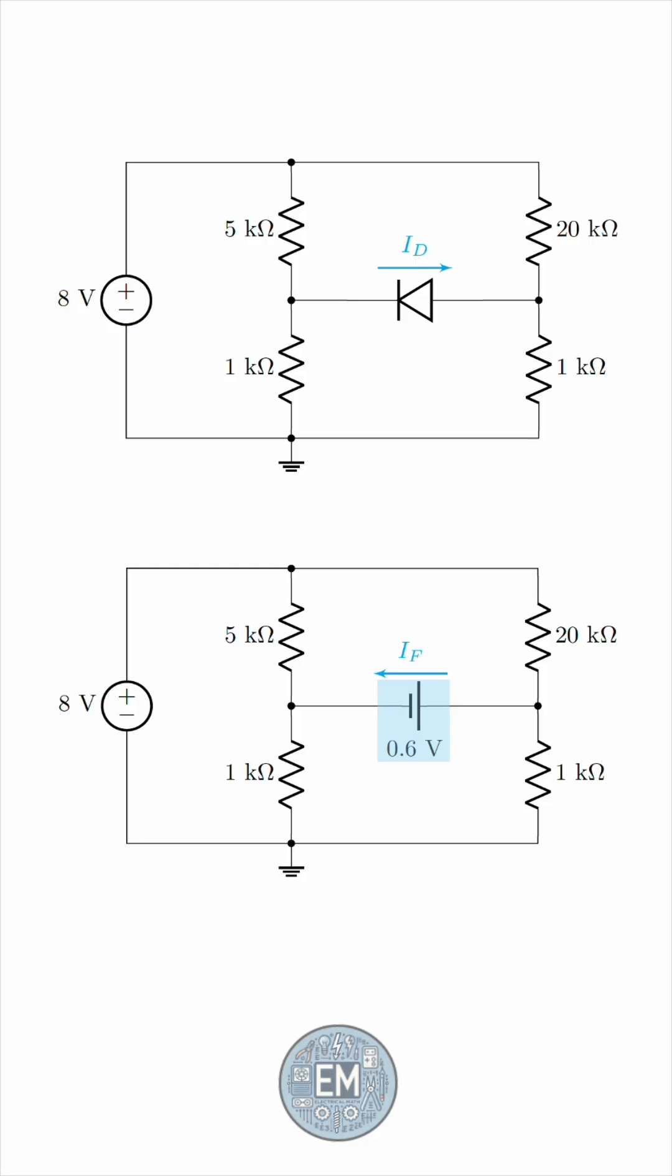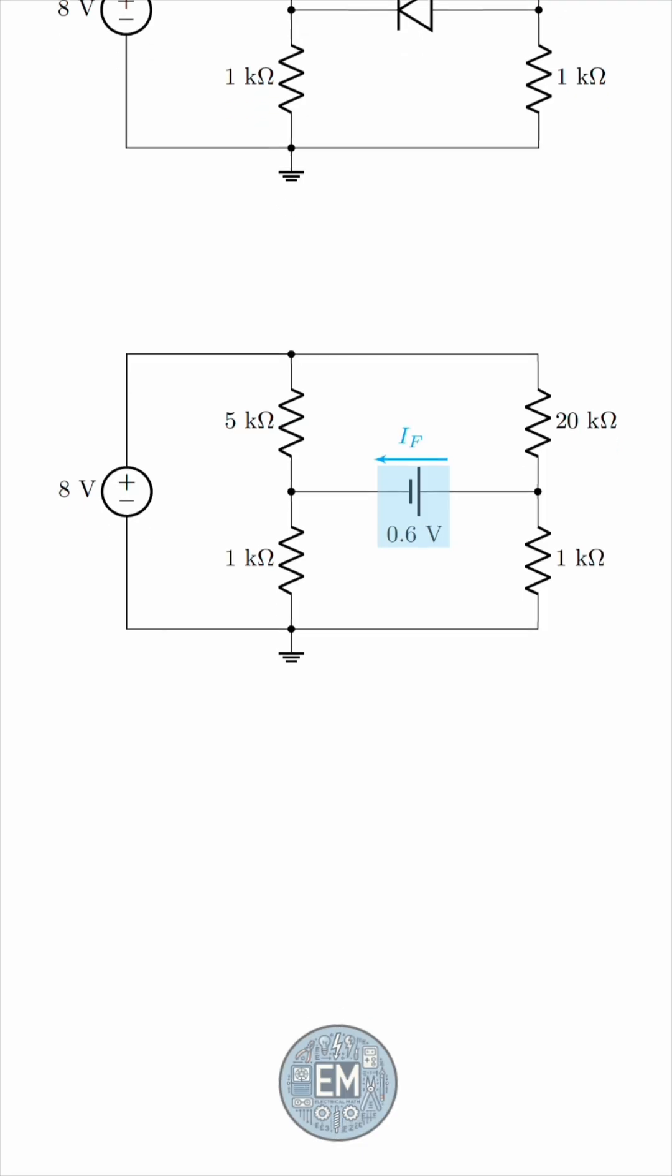The way we represent a constant voltage in a circuit is a voltage source. So, assuming that the diode is conducting, we can replace it with this 0.6 volt battery, and label a forward current, IF, from anode to cathode.